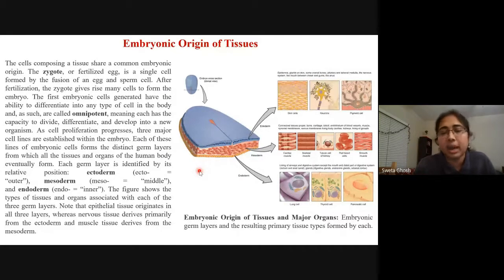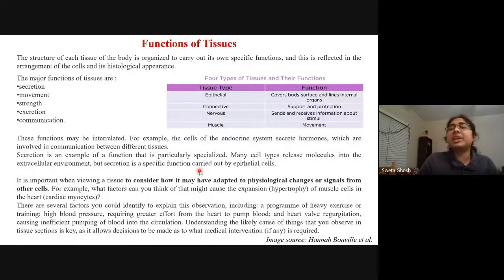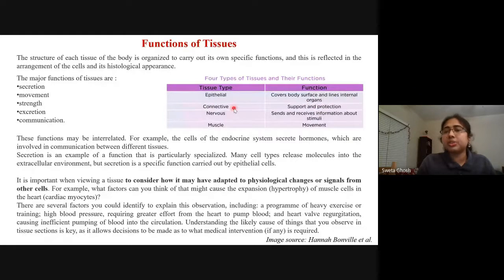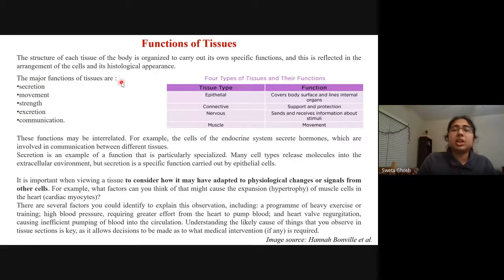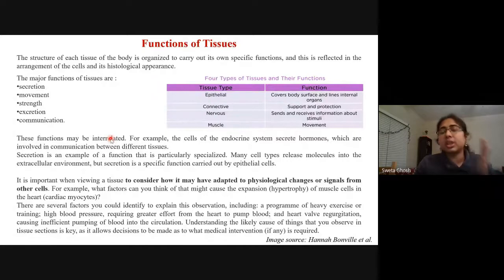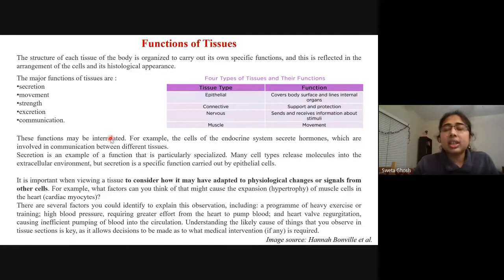Each different type of tissue has different functions: epithelial tissues cover body surfaces and line internal organs; connective tissues provide support and protection; nervous tissues sense and receive information about stimuli; muscles enable movement. Tissues can be broadly classified by major functions — secretion, movement, strength, and communication. It is very important to know the function of tissues because any problem in function will ultimately give rise to several diseases. Without this knowledge, we can't detect where a problem lies if a function is not working properly.